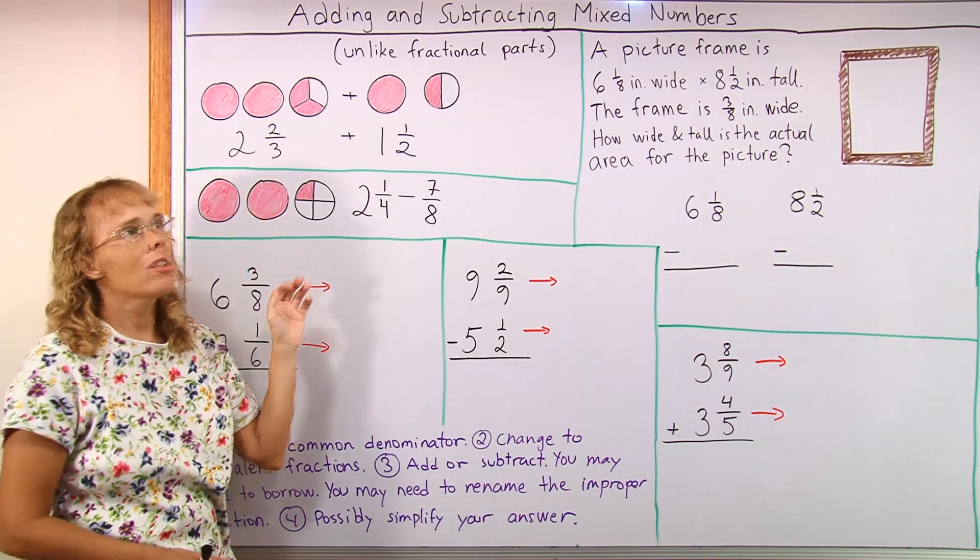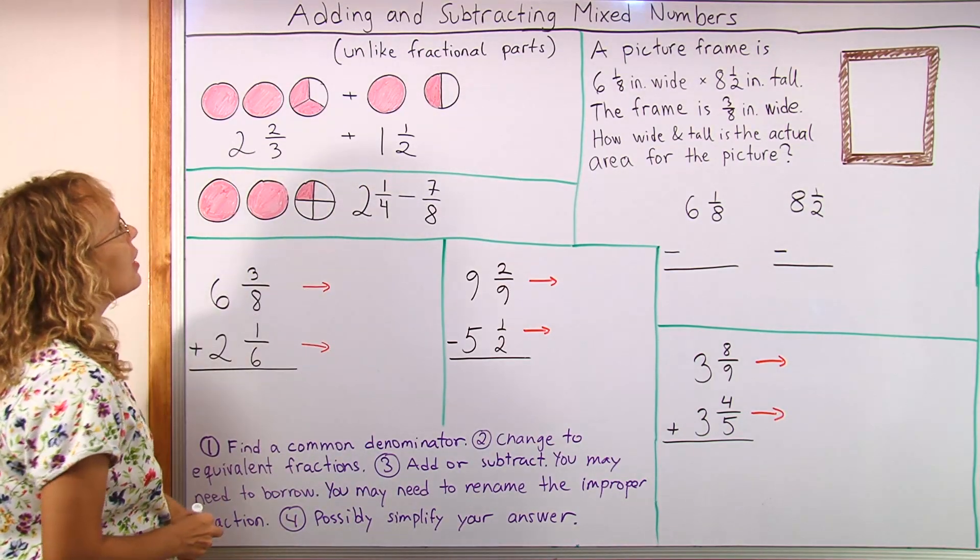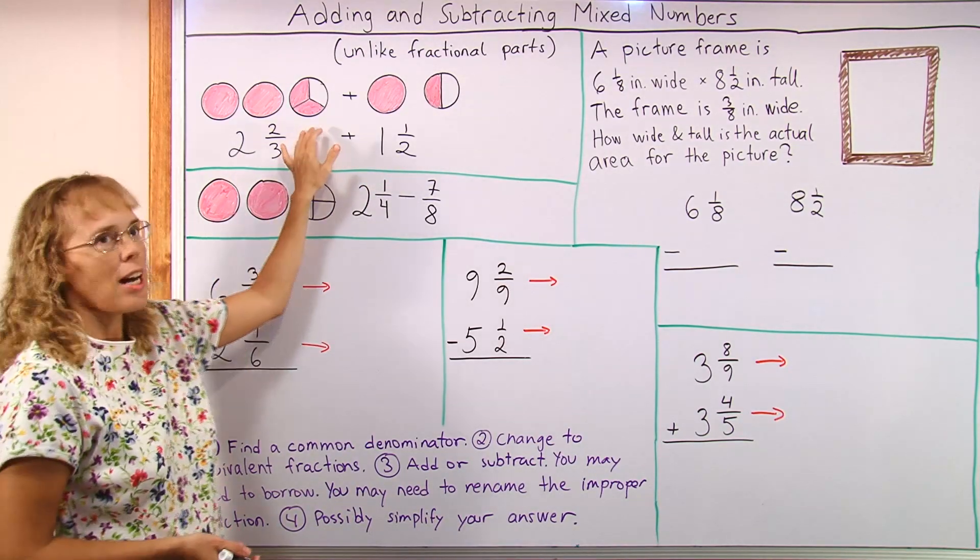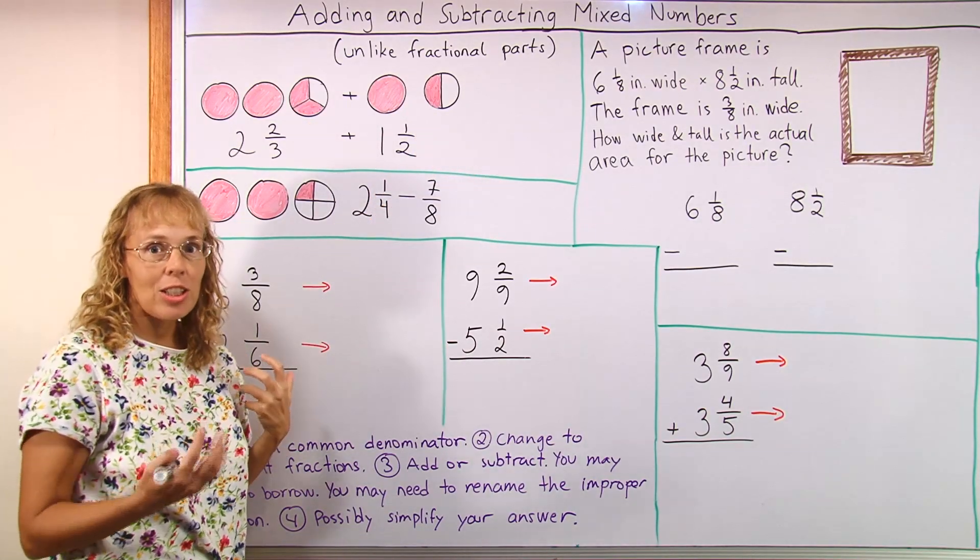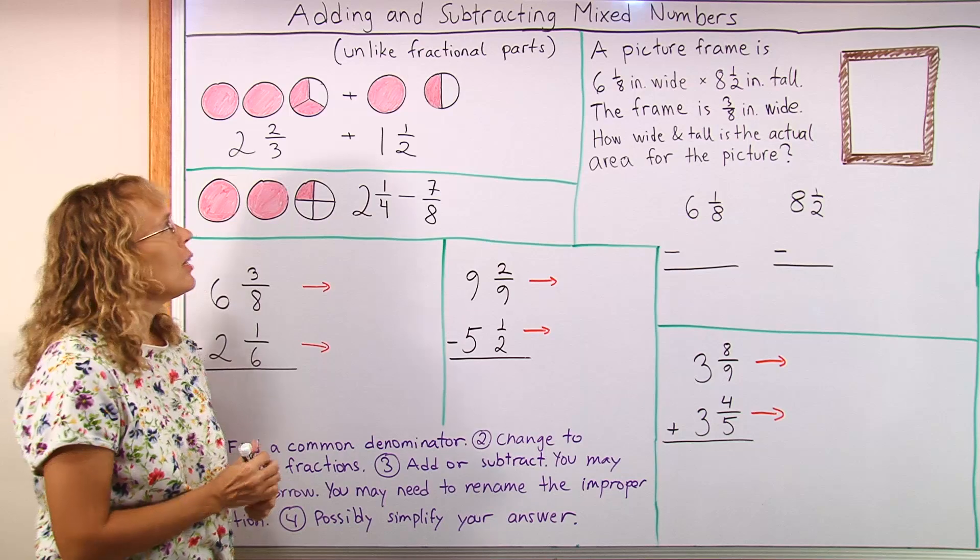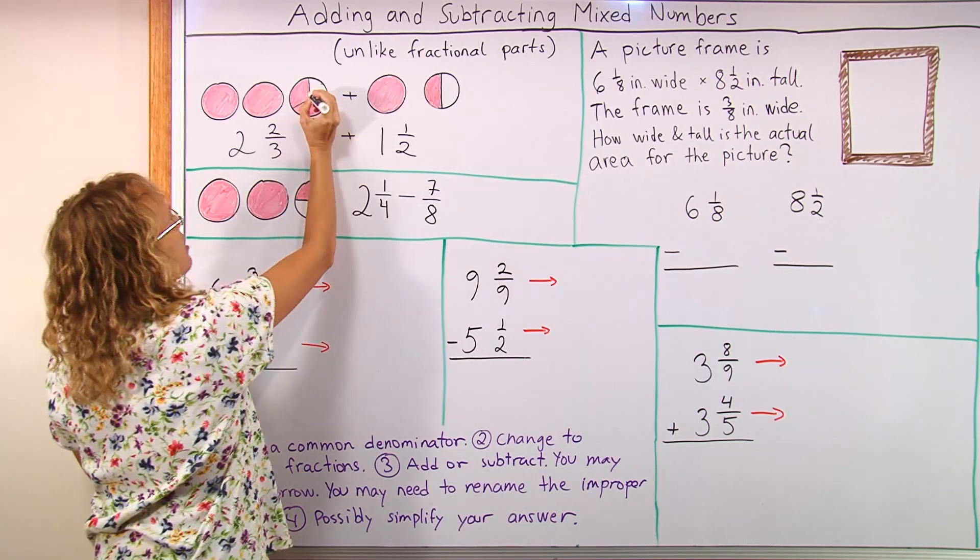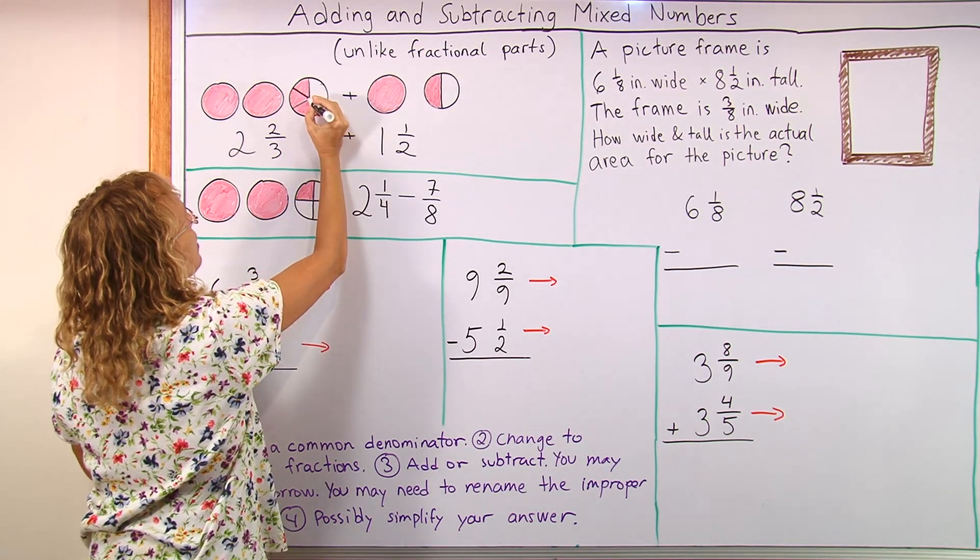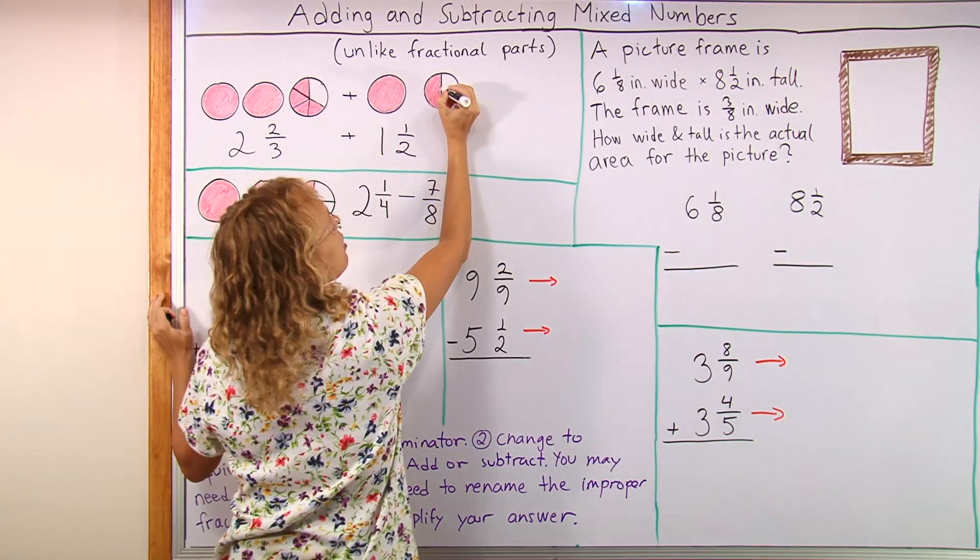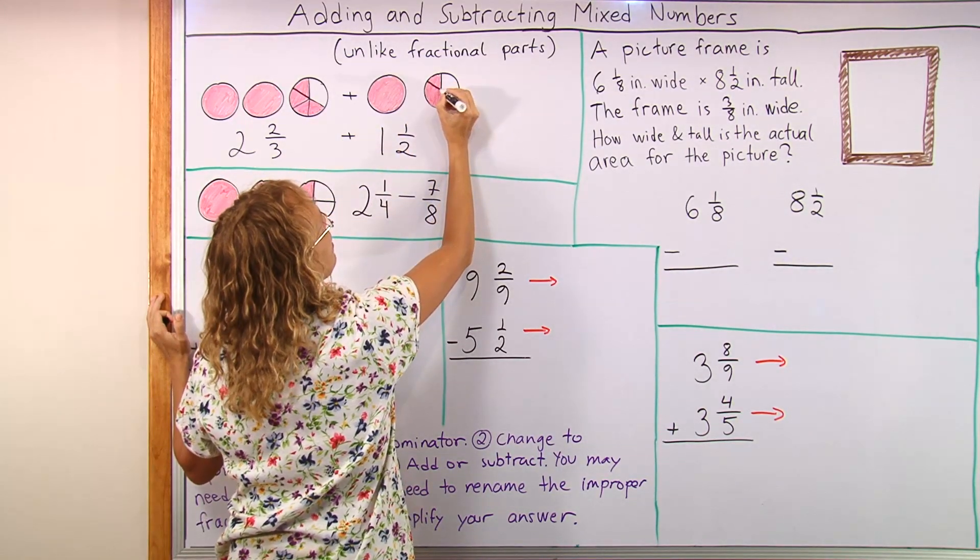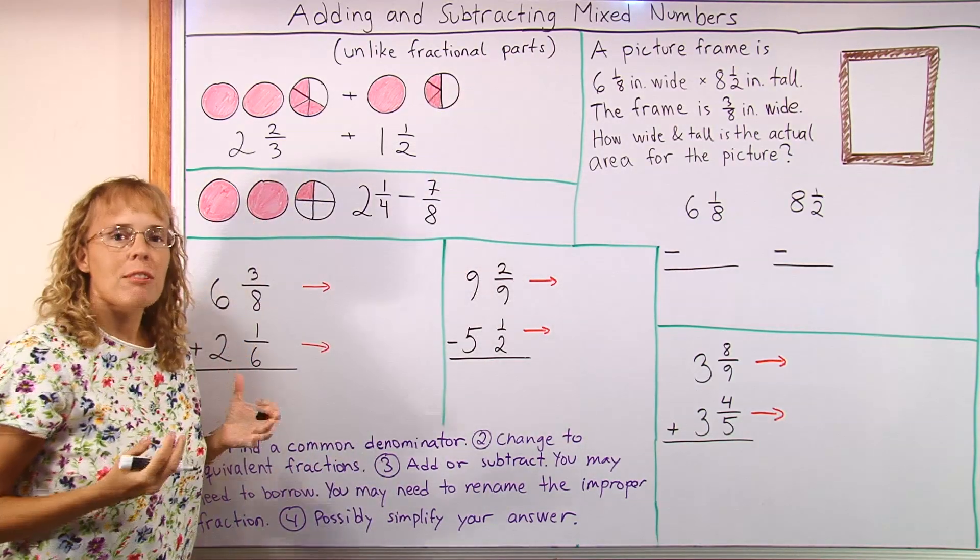Let's say we have to add 2 and 2 thirds and 1 and a half. Now first of all we cannot add thirds and a half together just like that, because they are not the same size parts. We need to divide this into sixths. So it becomes 4 sixths over here, and this one into sixths too, so it becomes 3 sixths.